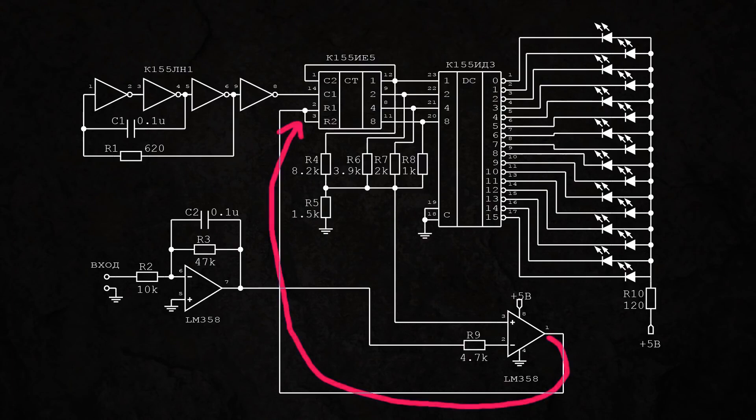In this case, the counter will reset when the condition is triggered, and only part of the LEDs will light up. An advantage of this circuit is that there will be no pause in the blinking of the LEDs.